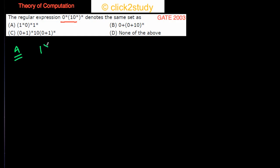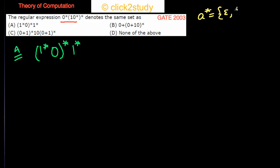Let's look at option A: it is 1-star, 0-star, and 1-star. A quick review — a-star means you can concatenate a with itself as many times as you want. Concatenating zero times gives the empty string, once gives a, twice gives aa, and so on up to infinity.